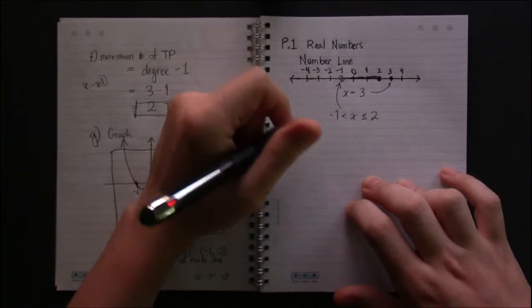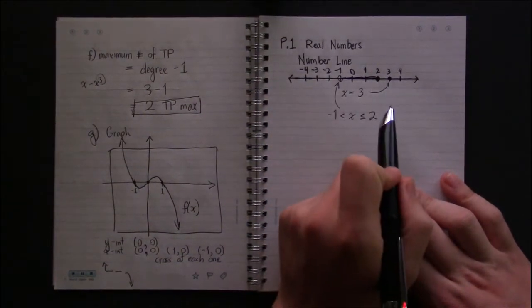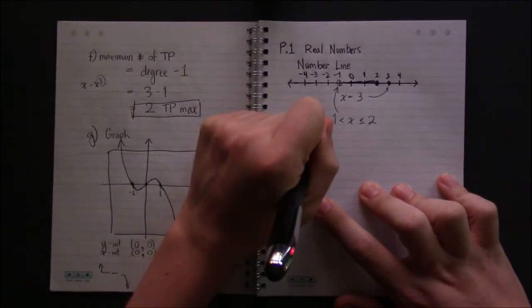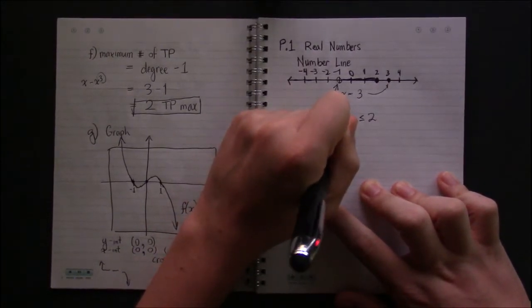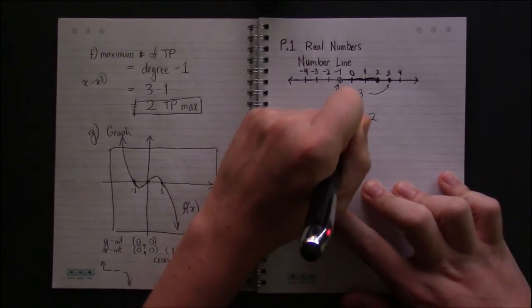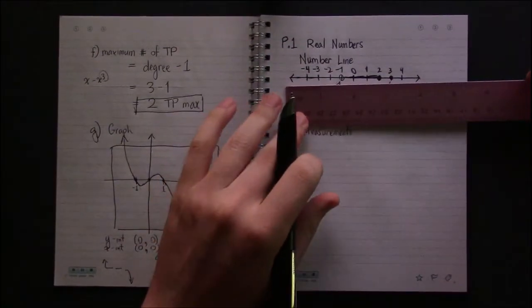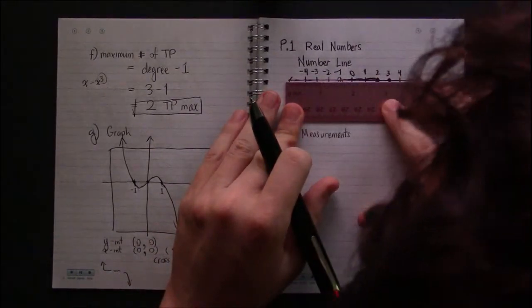The natural way these segments occur is in measurements. If I take a look at the number line that I've drawn here,